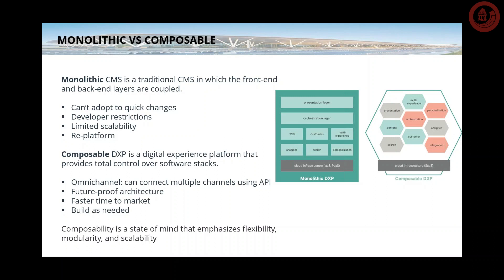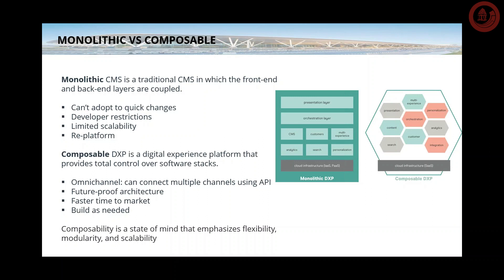Because of the omni-channel nature, you can connect multiple channels using APIs. For example, with XM Cloud you can connect with Sitecore Search, Sitecore Send, Sitecore CDP for personalization, and many more tools. It is a future-proof architecture, faster to market, and build as needed — for example, if you want search integration use Sitecore Search, or if you want personalization use CDP. Composability is a state of mind that emphasizes flexibility, modularity, and scalability.